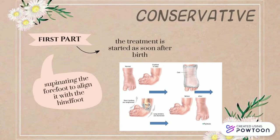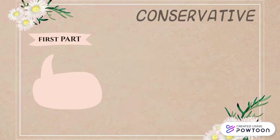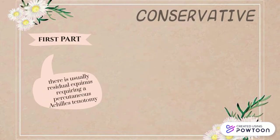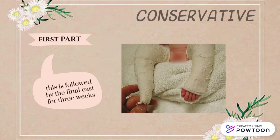This is followed by abducting the foot around the head of the talus. After these manipulations, there is usually residual equinus in about 90% of cases, requiring a percutaneous Achilles tenotomy which may be done under local anaesthesia in the clinic. This is then followed by the final cast for 3 weeks.